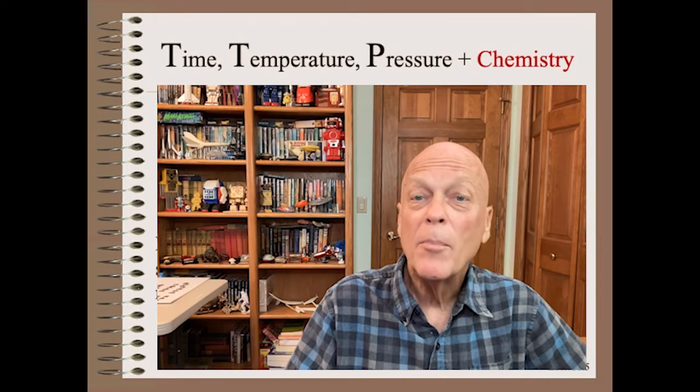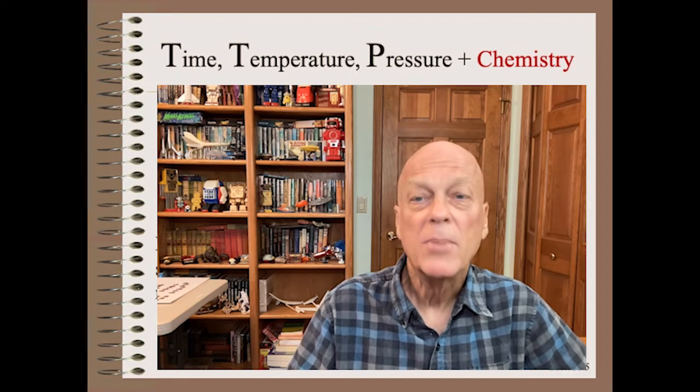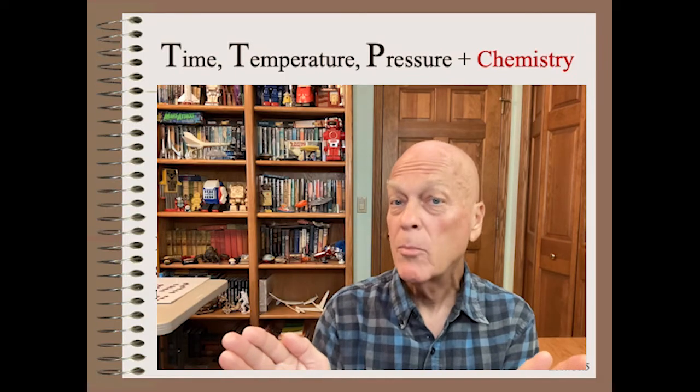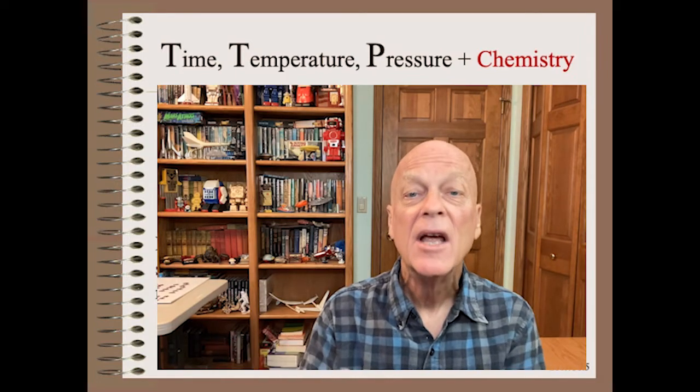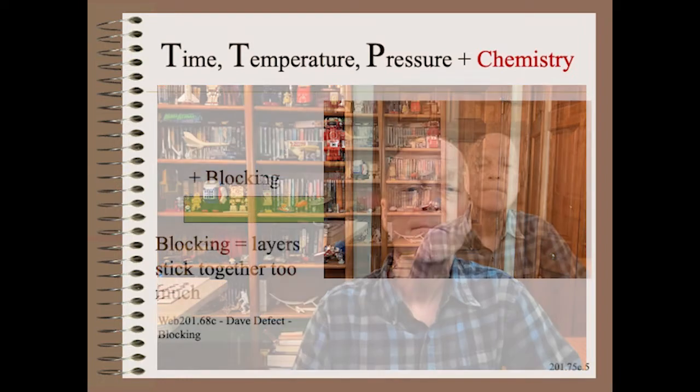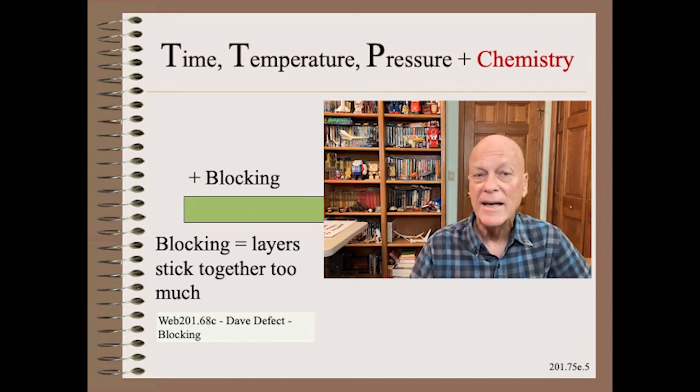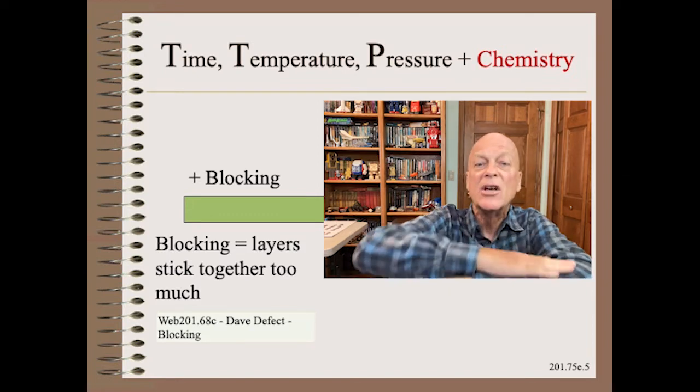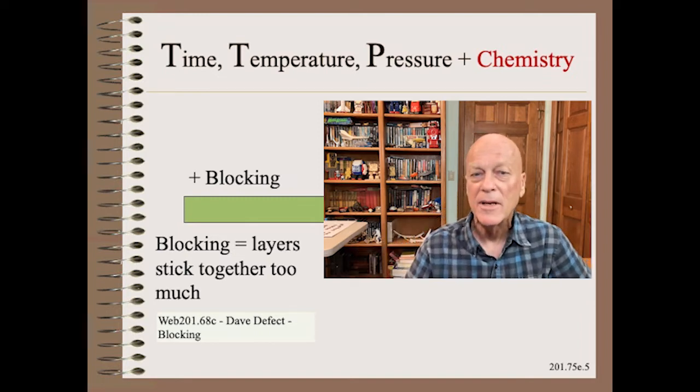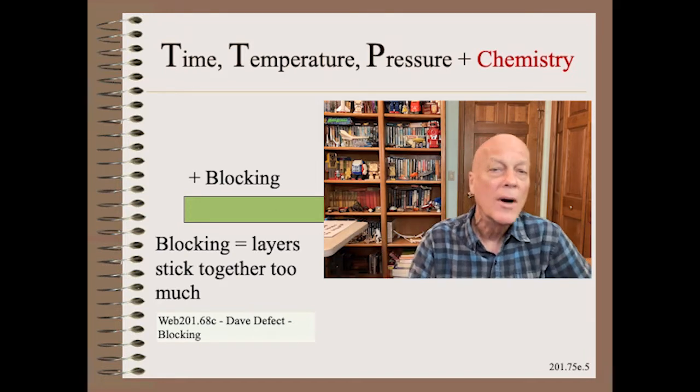In this next example we will discuss TTP plus chemistry. This is an extremely important product process design concept that applies to a wide variety of problems. Here we will apply it specifically to the blocking defect where layers near the bottom of the roll stick together unacceptably.